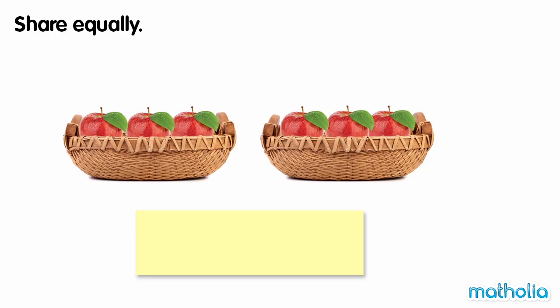When we share six apples equally between two baskets, each basket receives three apples. We can write this as six divided by two equals three.